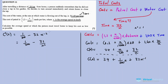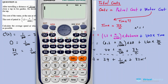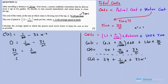For optimization problems it's always a good idea to work with positive exponents to make simplification easier. Setting C'(x) = 0 and solving: transposing gives 32/x² = 1/200. Cross-multiplying: 32×200 = x², so x² = 6400.